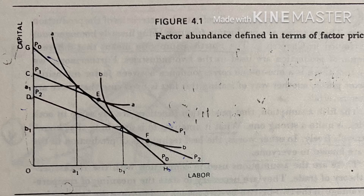According to these isoquants, B is the labor-intensive good and A is the capital-intensive good. Relative factor prices in country one, where capital is cheap, are given by the line p0 p0. Let us assume that the isoquants represent one unit of the respective good.